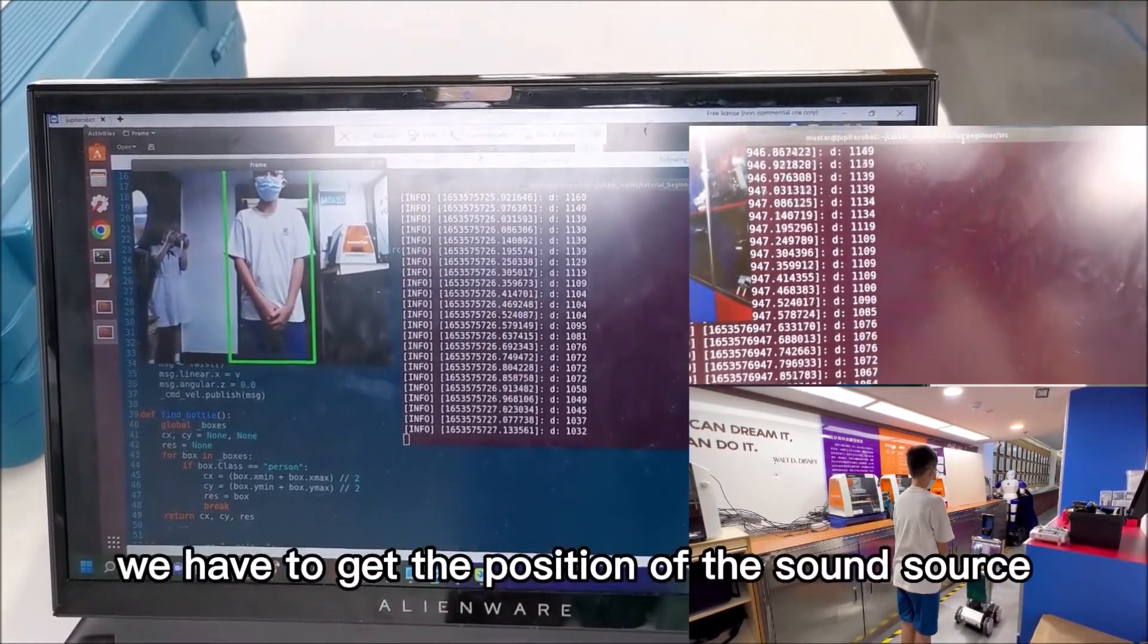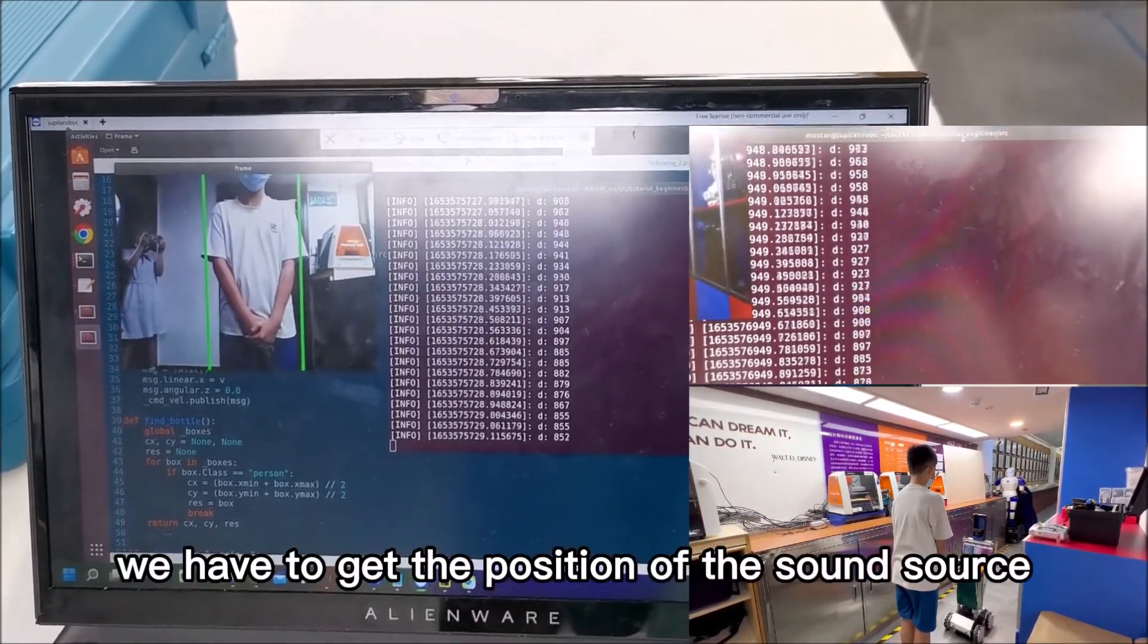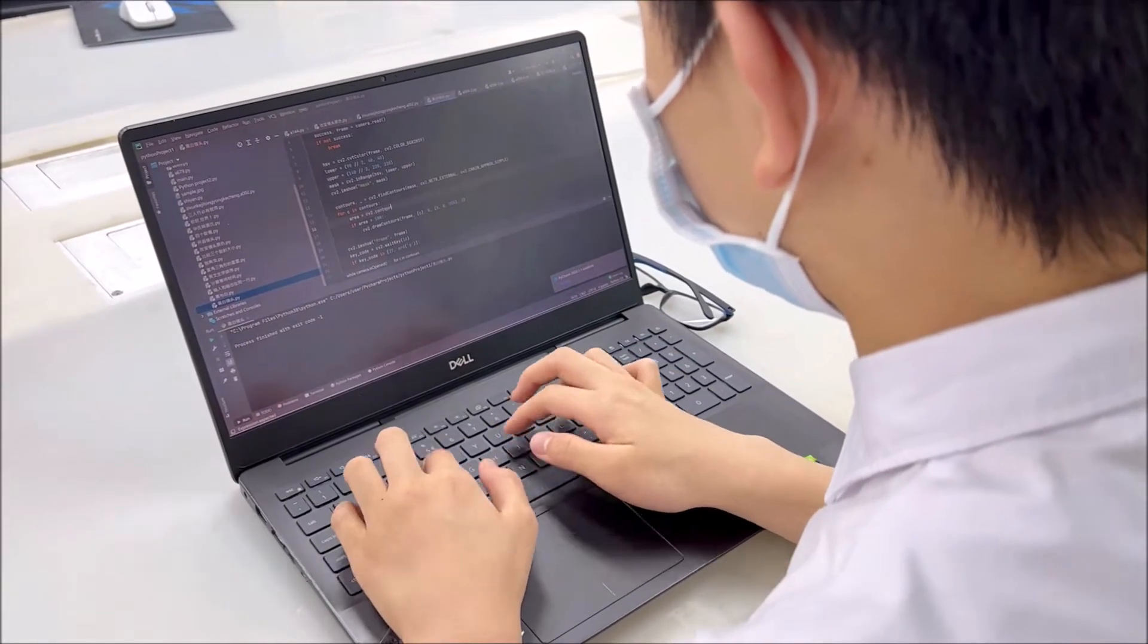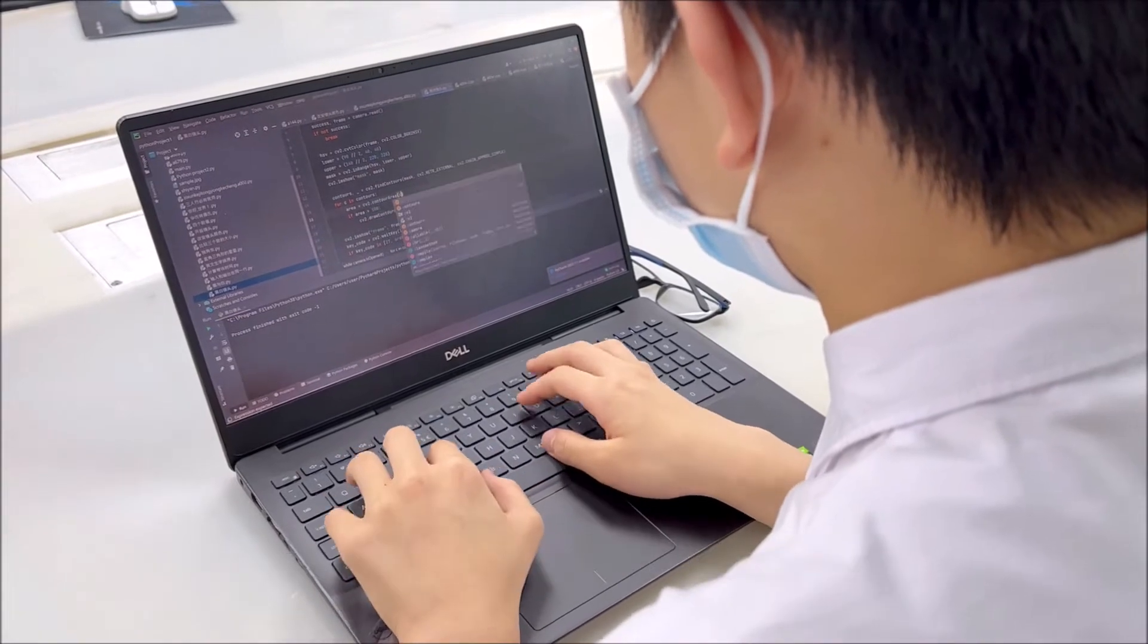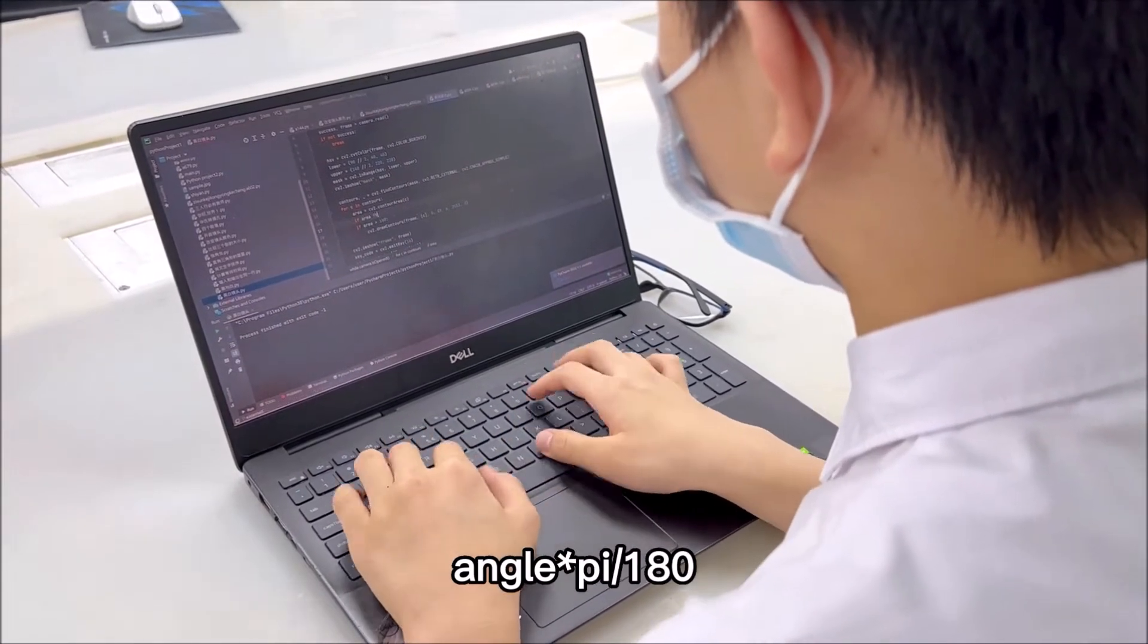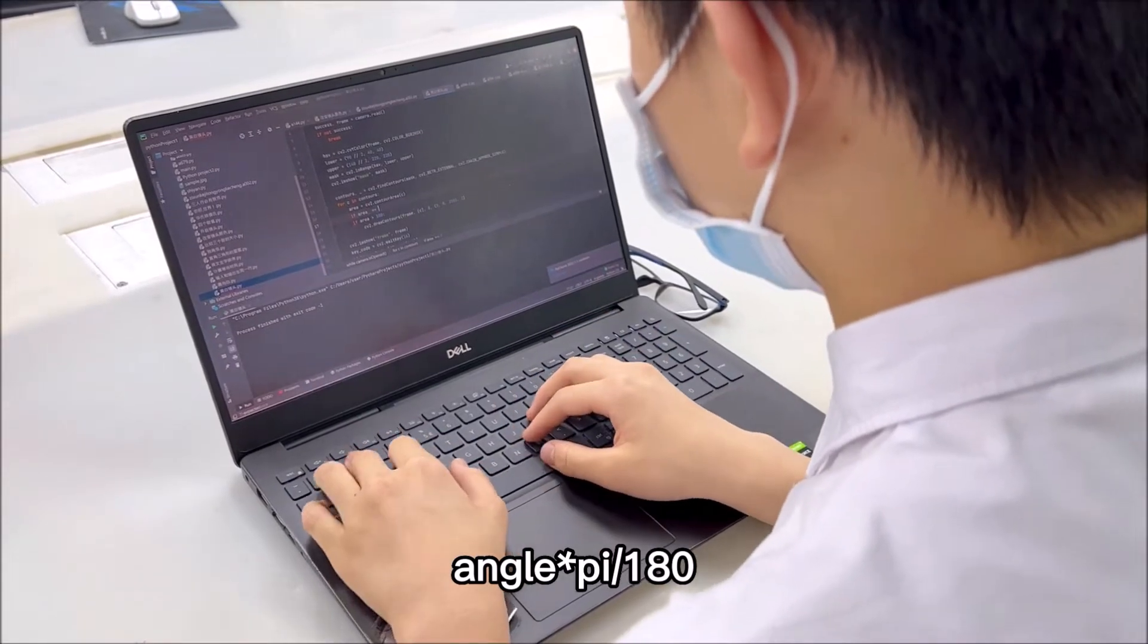Second of all, we have to get the position of the sound source. However, since the position of the sound source is in angle, we have to change it into radian. The formula that changes angle to radian is angle times pi divided by 180.